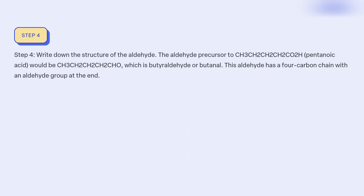Step 4: Write down the structure of the aldehyde. The aldehyde precursor to CH3CH2CH2CH2COOH (pentanoic acid) would be CH3CH2CH2CH2CHO, which is butyraldehyde or butanal. This aldehyde is a 4-carbon chain with an aldehyde group at the end.